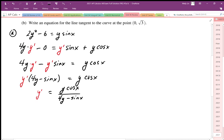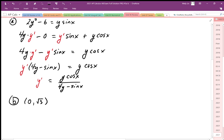Part b says write an equation for the tangent line for the curve at point 0 root 3. To write the equation of the tangent line I need the slope and I need a point. Well I have the point already so really all I need to do is calculate slope.